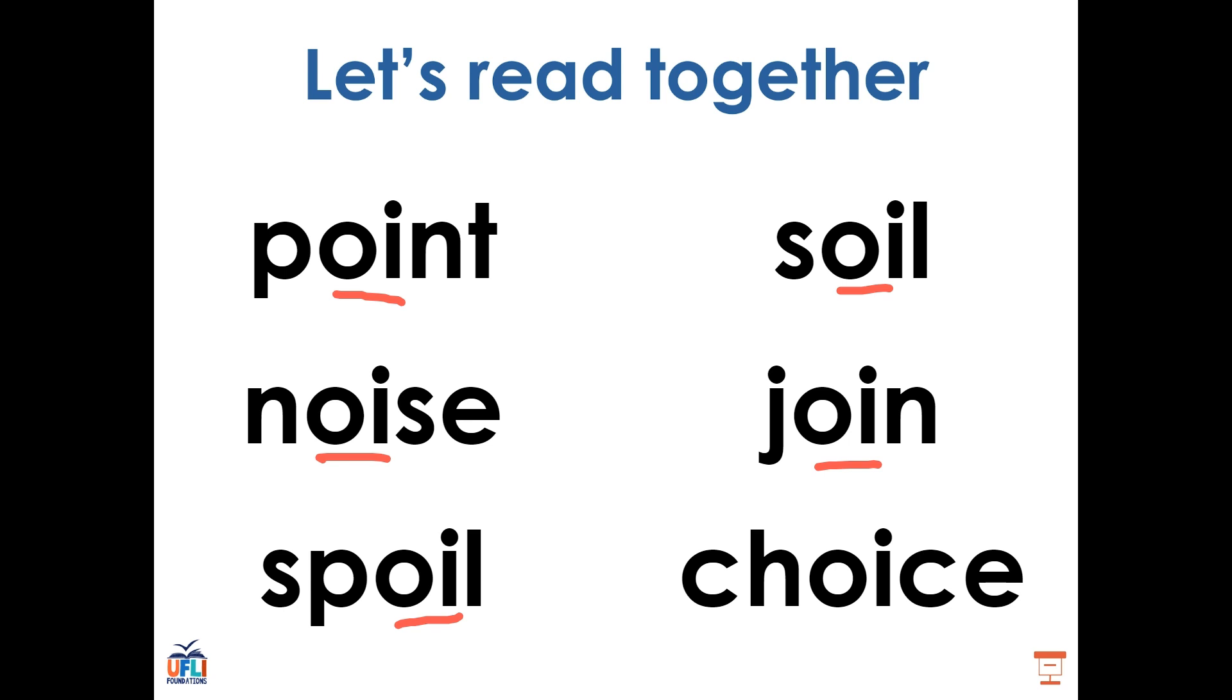What does this word say? Well done. This is the word choice. The C-H digraph is saying ch. The C followed by a silent E is going to say S. And the OI in the middle says OI. So our word is ch, OI, S, choice.